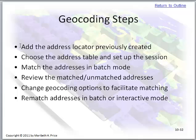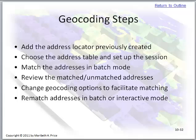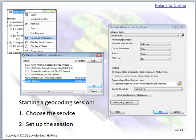The actual process steps are: add the address locator that you created, choose an address table and set up the session, match the addresses in batch mode, and then review the matched and unmatched addresses. It doesn't work perfectly, so we have to go back in and interactively rematch some addresses. We can change the geocoding options to facilitate the matching, and then rematch the addresses in batch or interactive mode.